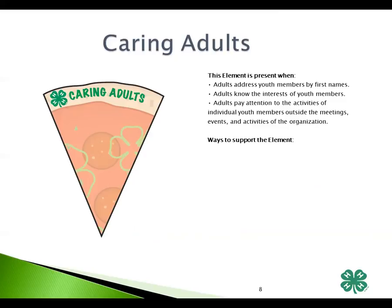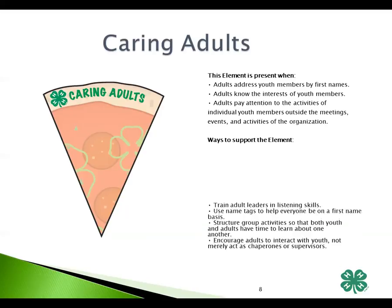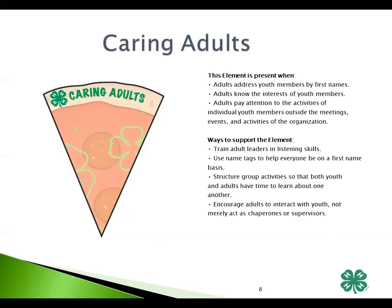For each of the elements, we will discuss what the element looks like when it's present, and then ways that you can support the element. You can add these tips onto your template. This element is present when adults address the youth members by their first names, when adults also know the interests of the youth outside of their program, and when adults pay attention to the activities of individual youth members outside of meetings, events, and activities of 4-H. Ways to support this element: train adult leaders in listening skills, use name tags to help everyone be on a first name basis, structure group activities so that both youth and adults have time to learn about one another, and encourage adults to interact with youth, not merely act as a chaperone or supervisor.